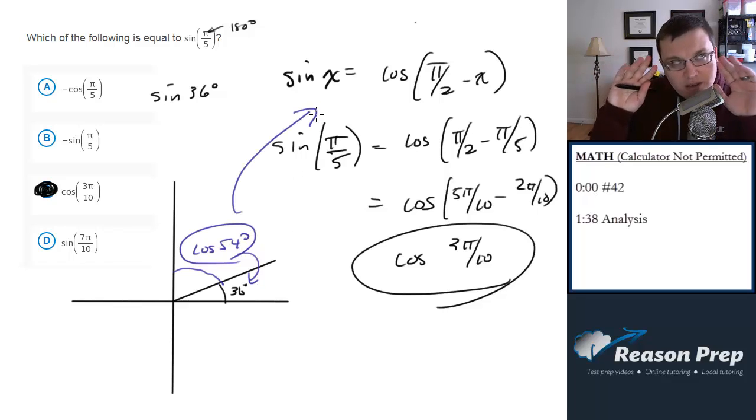It's essentially this relationship, just imagined intuitively or graphically. That again gives you choice C because 3 times 180 is 540 divided by 10 equals 54. Very tough question either way.